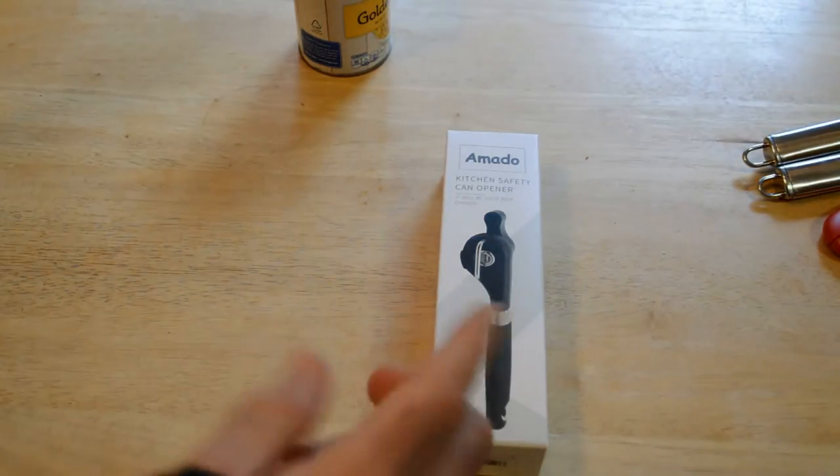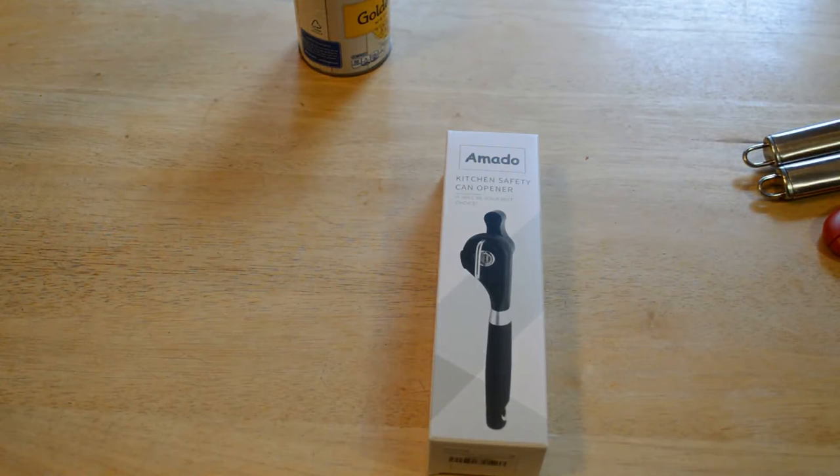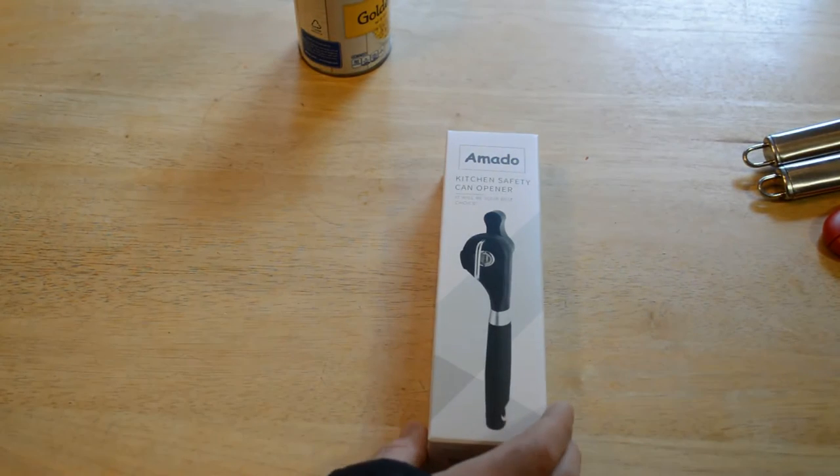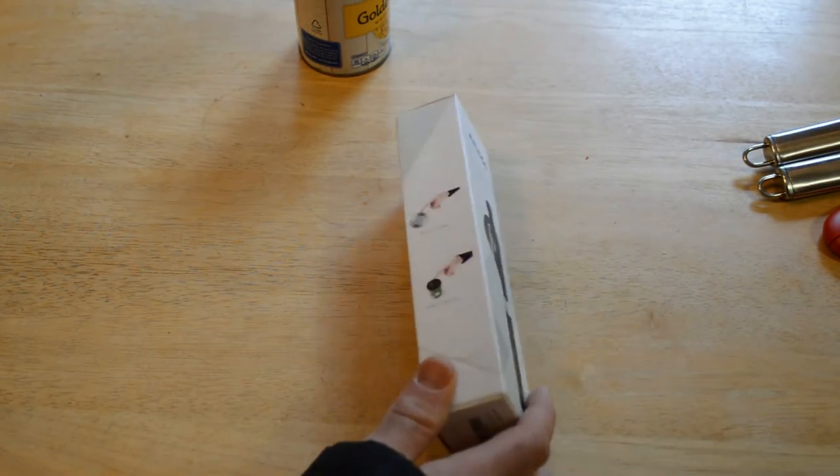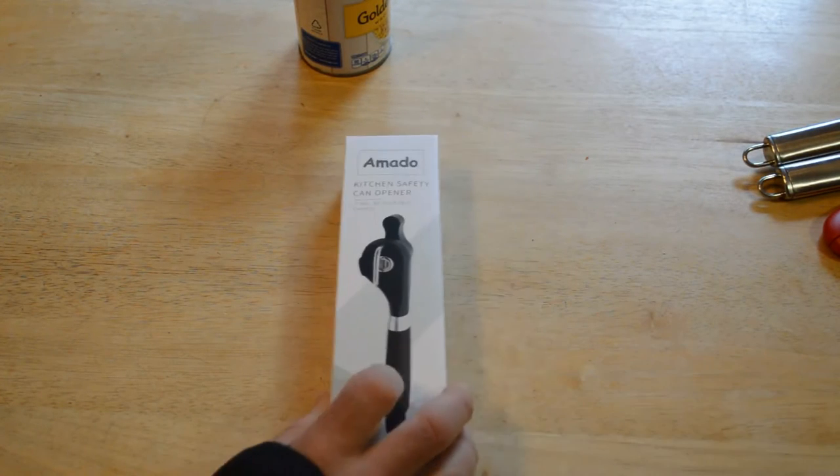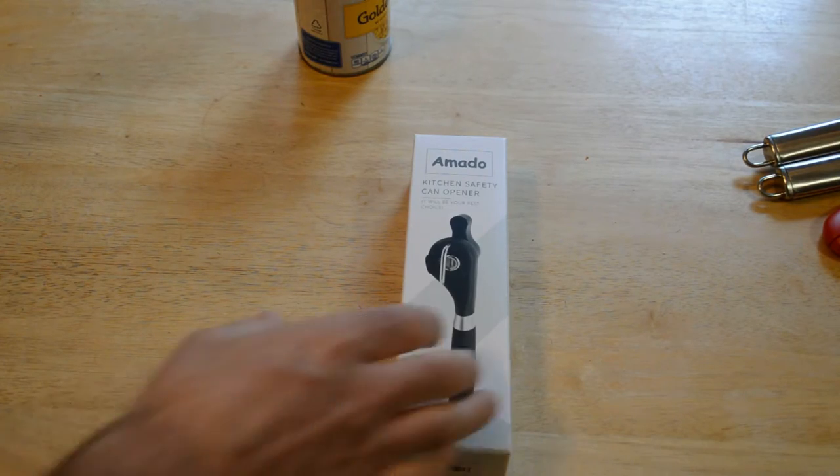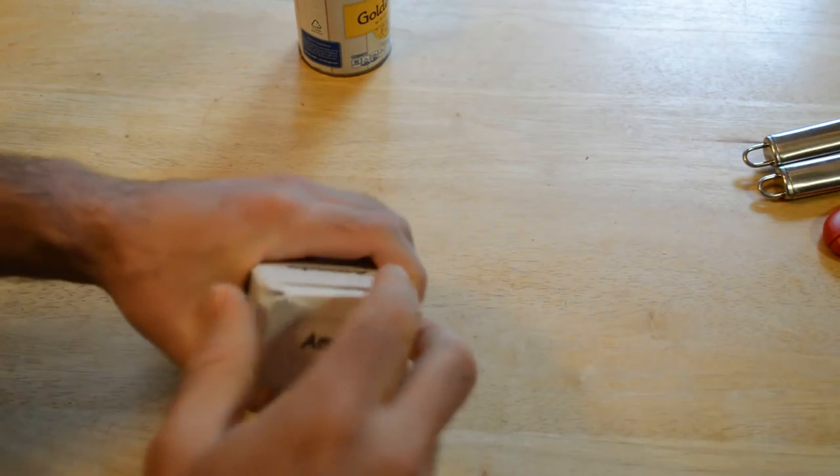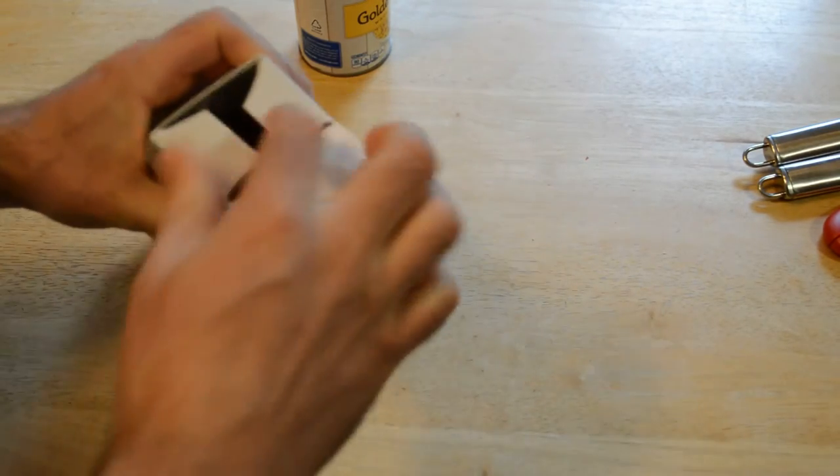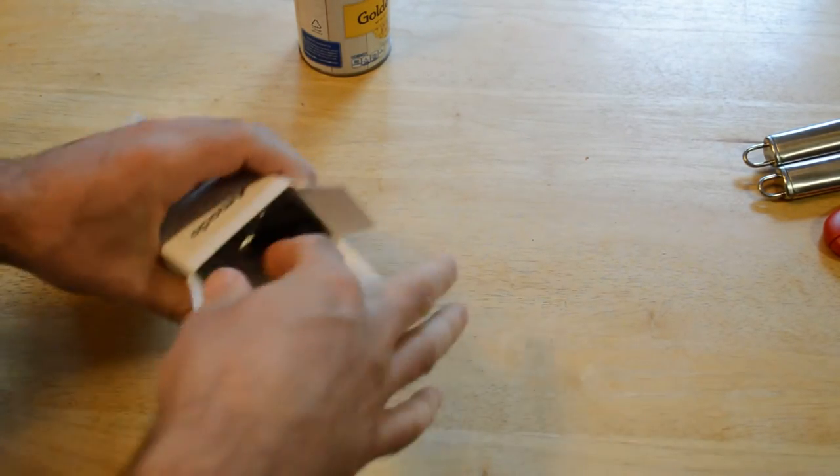It says it will be your best choice. So the main feature of this is you can cut off the lid of your can and it won't have sharp edges. I'm going to open it up here, see what's inside the box. Amato - if you haven't seen my other reviews of Amato products, they've always turned out to be very high quality.